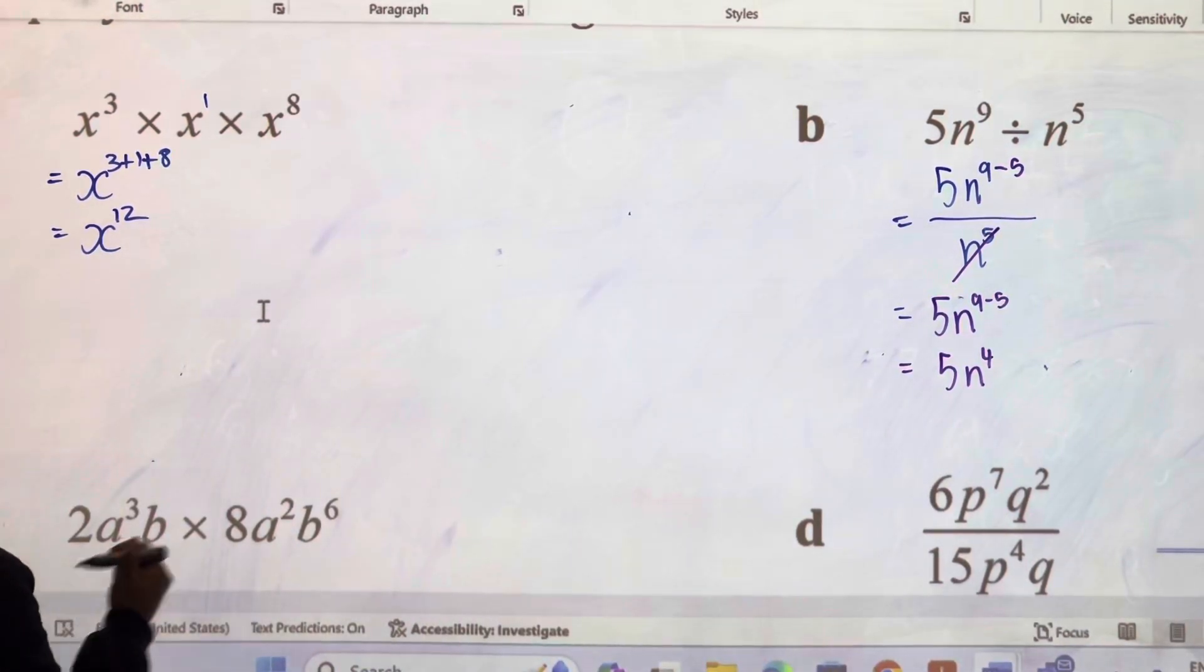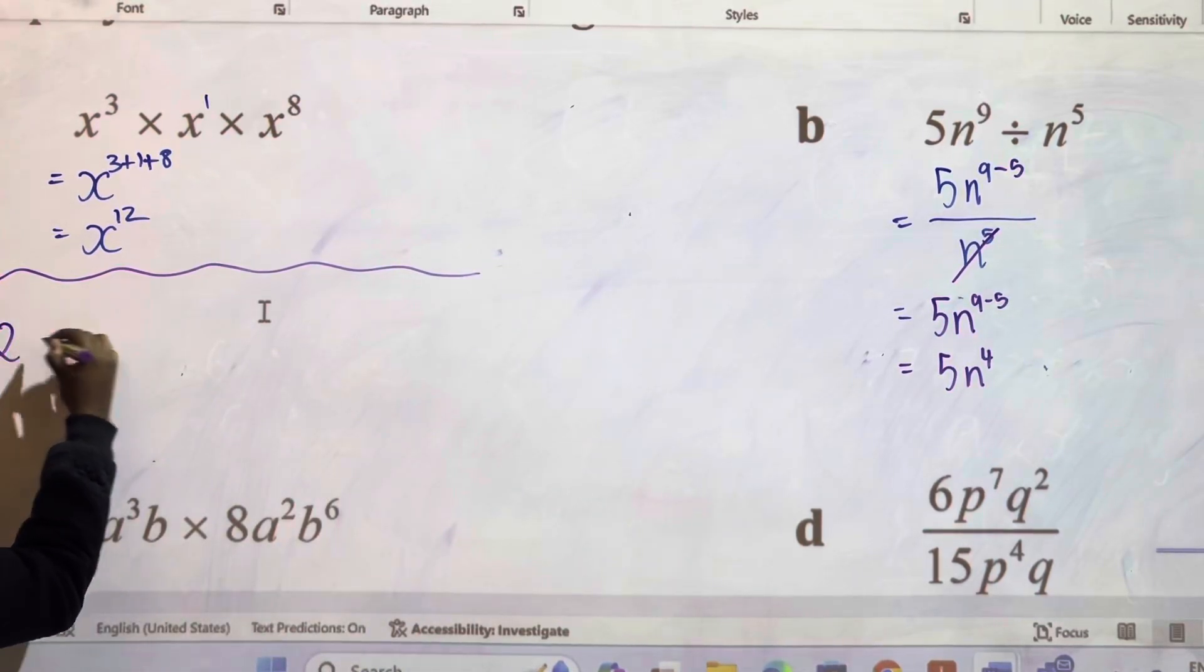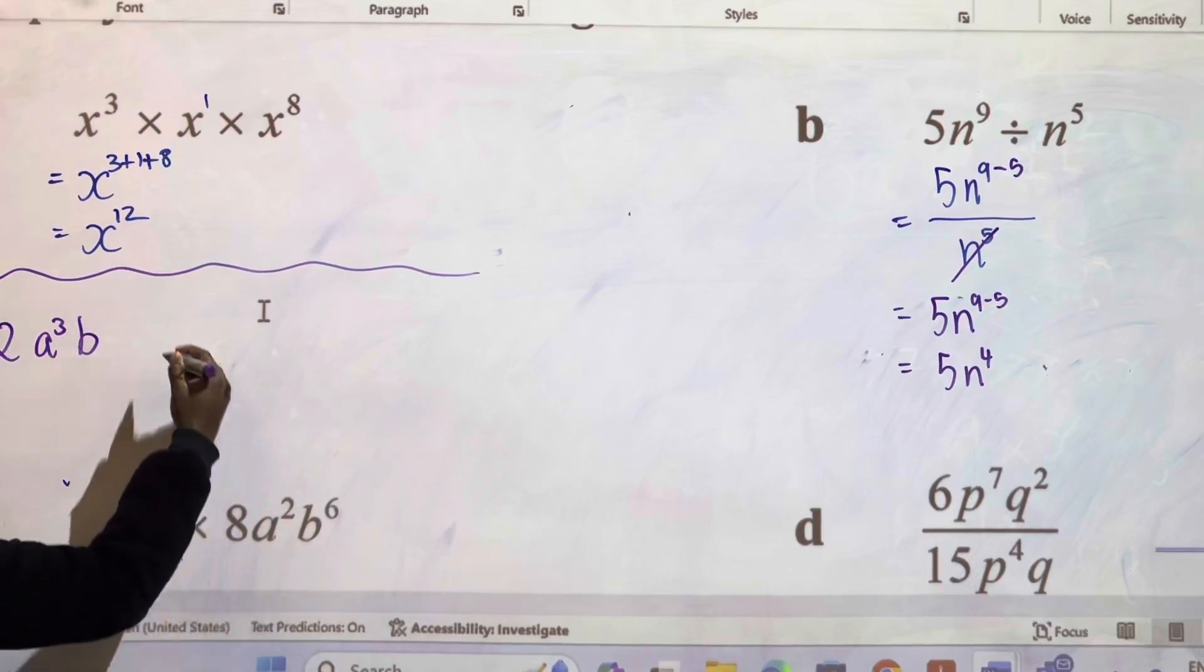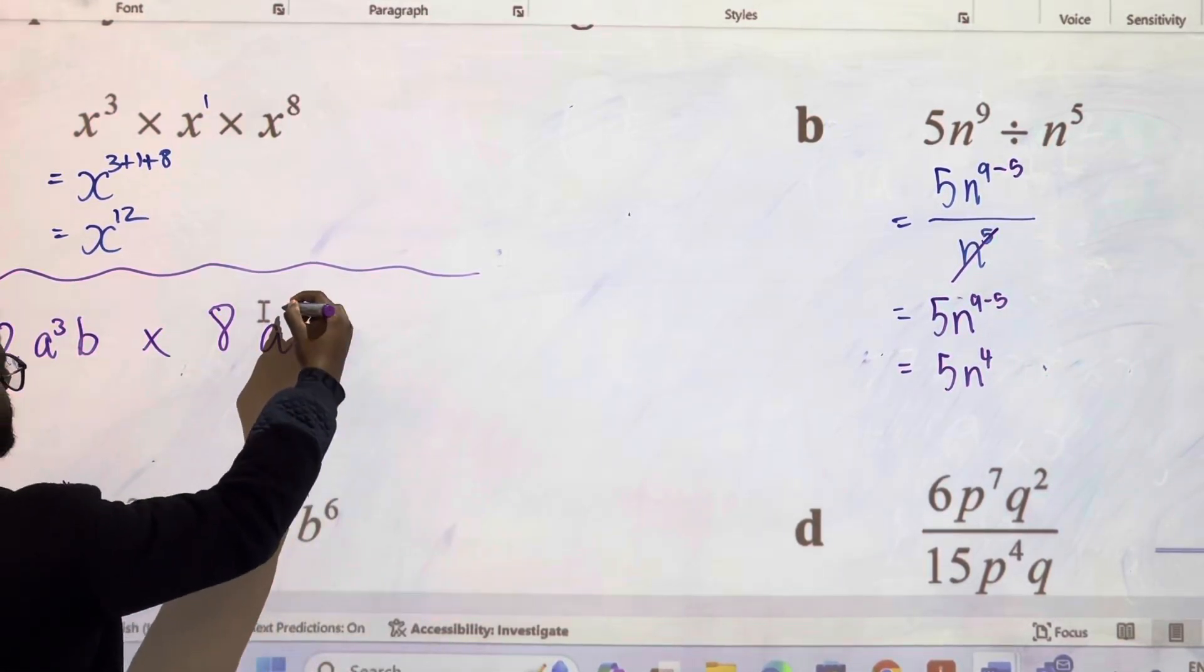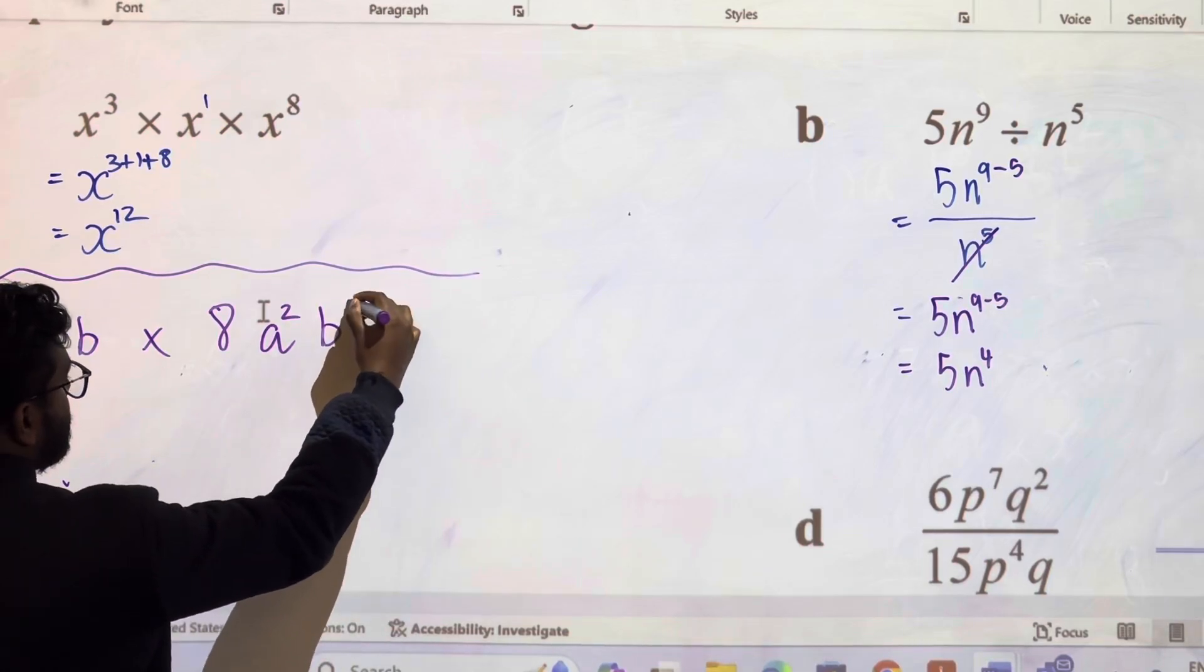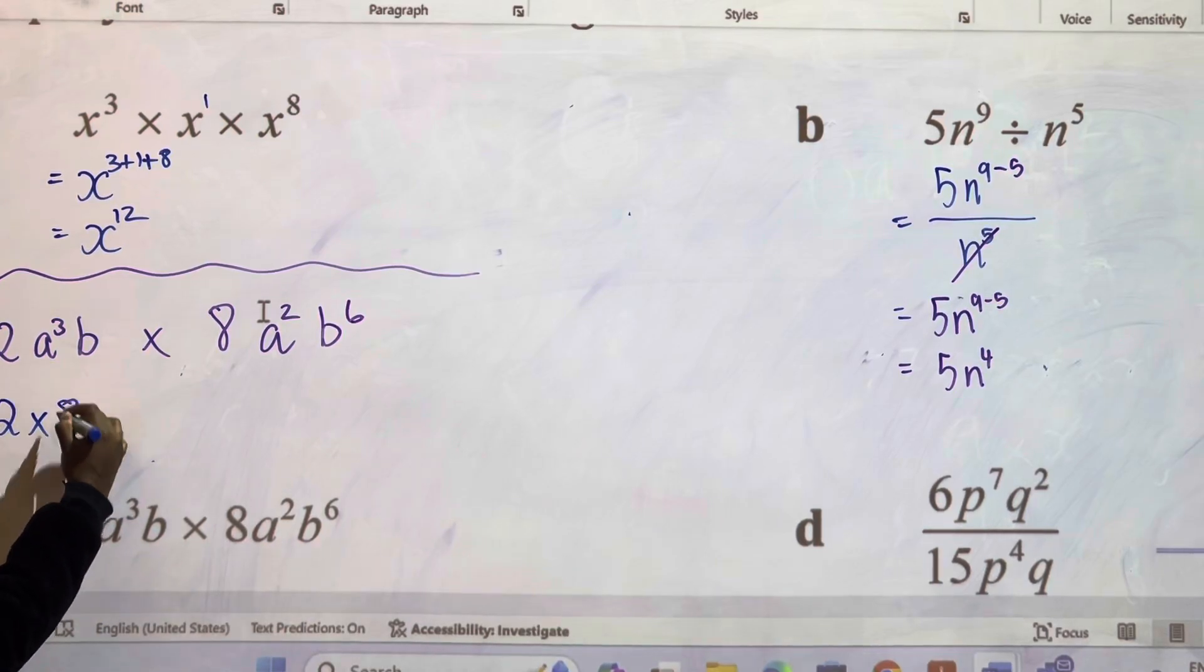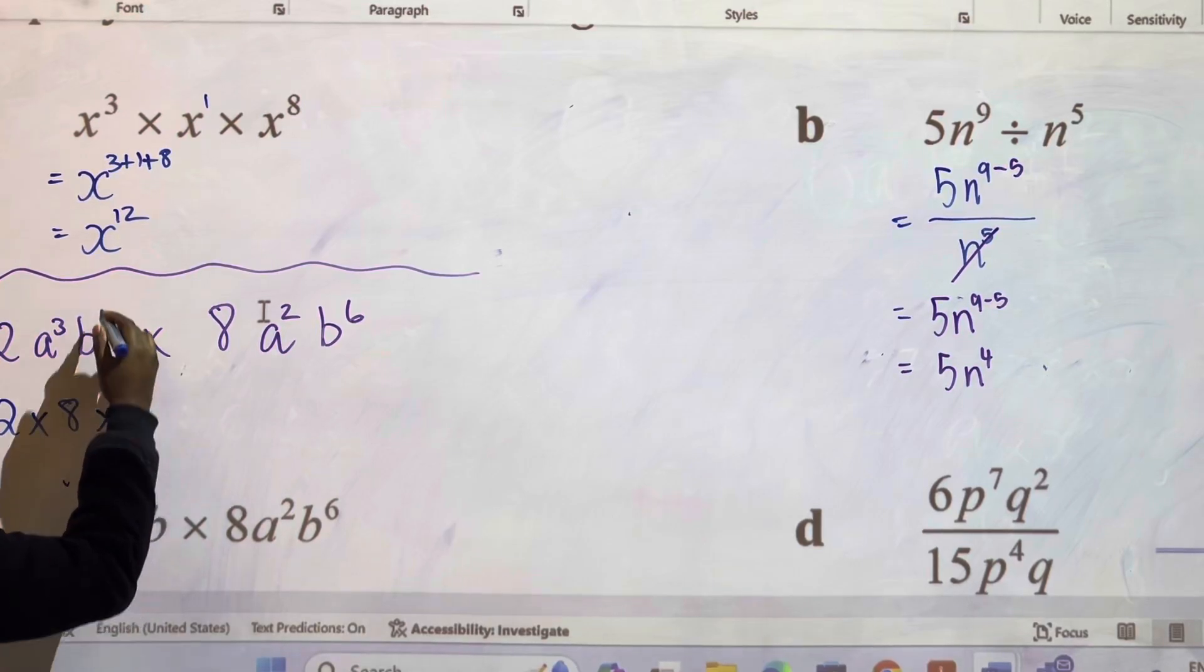Now this question, I'm just going to write this here. We've got 2a³b times 8a²b to the power of 6. What are we going to do? We're going to multiply with the same bases. So 2 times 8. Now you can do that in your head if you wanted to.